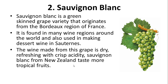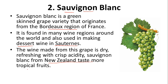The second grape variety is Sauvignon Blanc — the pronunciation is Sauvignon Blanc. It is a green-skinned grape variety that originates from the Bordeaux region of France. It is found in many wine regions around the world and is also used in making dessert wine in Sauternes — a region in France that makes excellent and very expensive dessert wine using noble rot, which is a type of grey mold. The wine made from this grape is dry and refreshing with crisp acidity. Sauvignon Blanc from New Zealand tastes more tropical, with passion fruit, pineapple, and banana flavors.